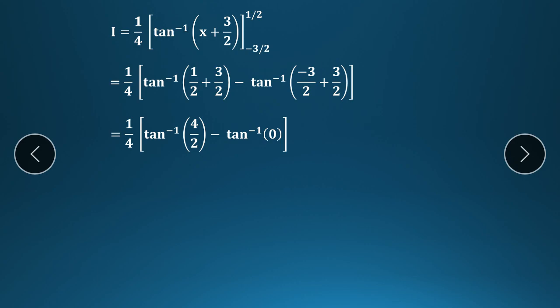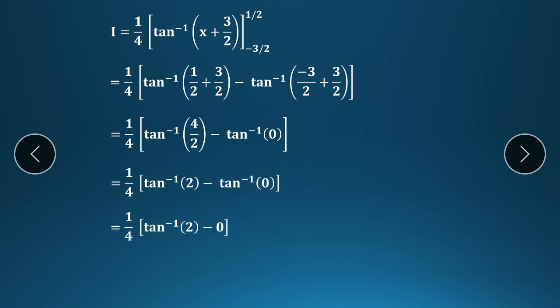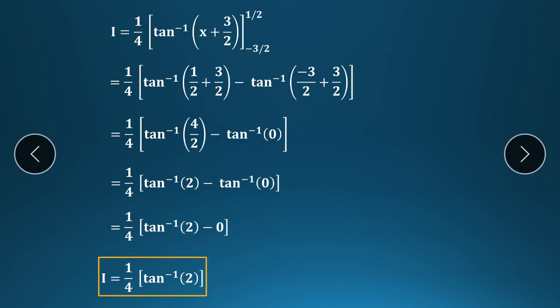Since tan⁻¹(0) = 0: (1/4)[tan⁻¹(2) − 0] = (1/4) tan⁻¹(2). This is the final value of I. In this way, the second example is also easily solved — just find the third term, add and subtract it in the denominator expression, write it in (a ± b)² form, then use the appropriate formula.